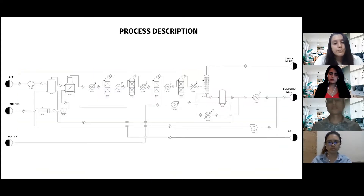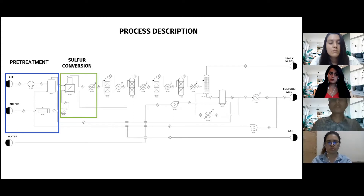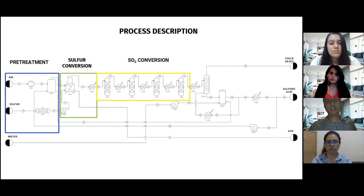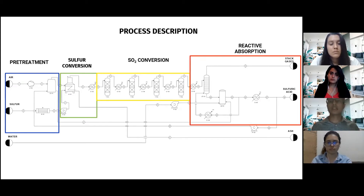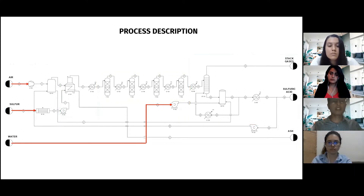The process is divided into four steps. The first step is the pretreatment: air and sulfur are inputted to the process. Air is dried in a drying tower and sulfur is preheated and melted. The second step is sulfur conversion to sulfur dioxide using a converter with intermediate heat exchangers. Finally, reactive absorption is carried out in an absorption tower, where water is inputted, and the final product is 96% sulfuric acid. The basic raw materials are air, sulfur, and water.